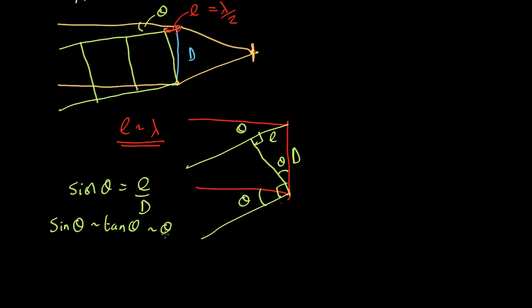So instead of writing sine theta, we can just write theta, as long as theta is measured in radians. So what we actually have is theta equals L over D.